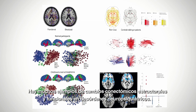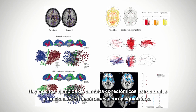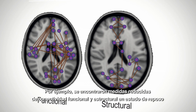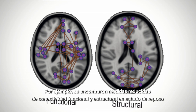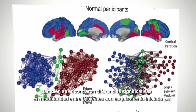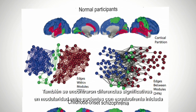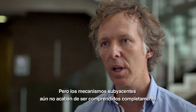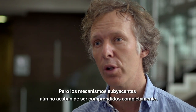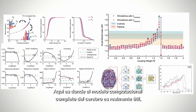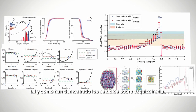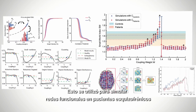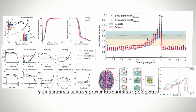There are many examples of structural and functional connectomics changes in neuropsychiatric disorders. For example, reduced resting state functional and structural connectivity measures were found in two independent studies of patients with schizophrenia. Significant changes in modularity were also found between patients with childhood onset schizophrenia and a control population, but the underlying functional mechanisms are not yet fully understood. Whole brain computational modelling is very useful here, as demonstrated by studies in schizophrenia that simulated functional networks and predicted topological changes.